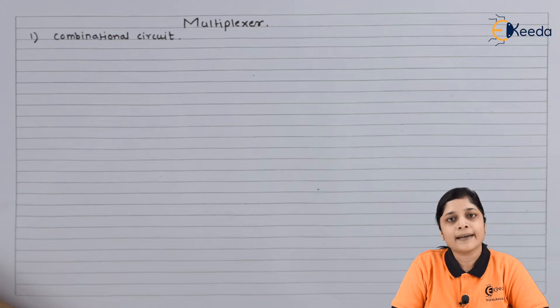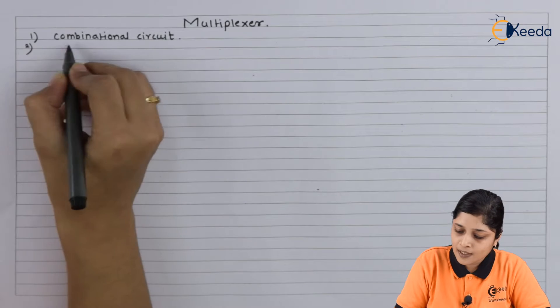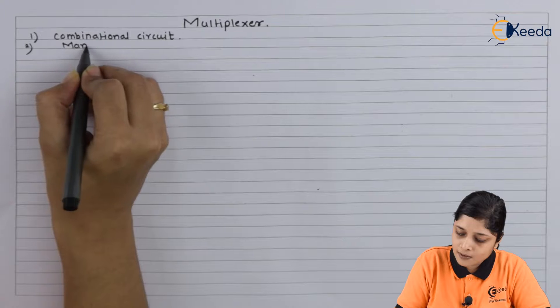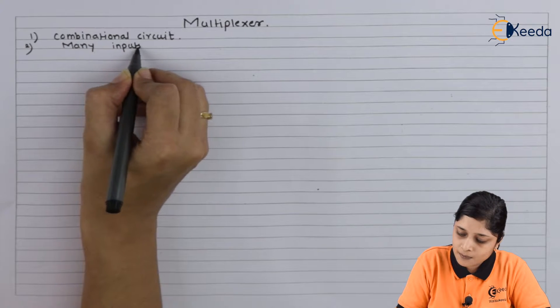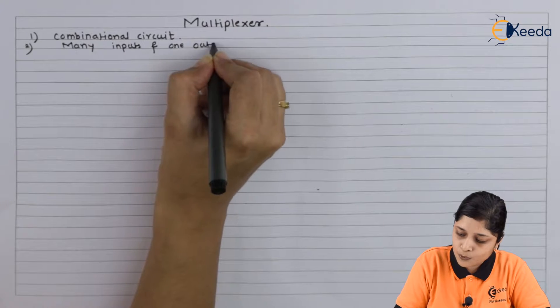Multiplexers have many inputs and one output. This is the second feature, it has many inputs and one output.